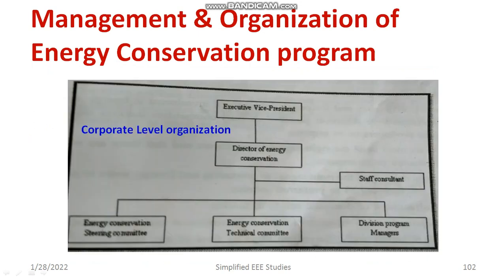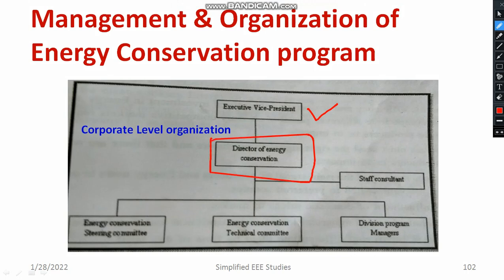Moving on to the third type — corporate level organization. In the basic block diagram, the top authority is the executive vice president. The director of energy conservation communicates all energy-related activity with the executive vice president and submits reports on all energy-related activities and production. The director of energy conservation has a very important role in corporate level organization and can perform different tasks with the help of a staff consultant.